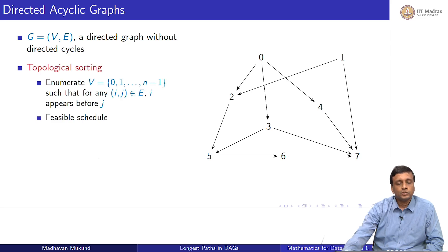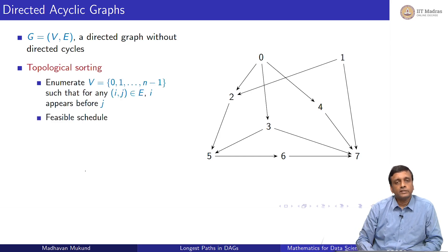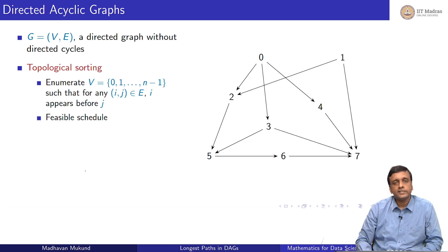If I do a topological sort on this DAG, I list out the vertices such that whenever there is an edge from i to j, i appears before j, and this gives me a feasible schedule.